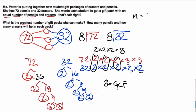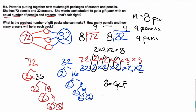It turns out Ms. Potter can make 8 gift packs. For the second part: how many pencils will be in each package? 72 divided by 8 is 9, so there are 9 pencils per pack. And 32 divided by 8 is 4, so there are 4 erasers in each package. That's how we use the greatest common factor to answer questions like this.